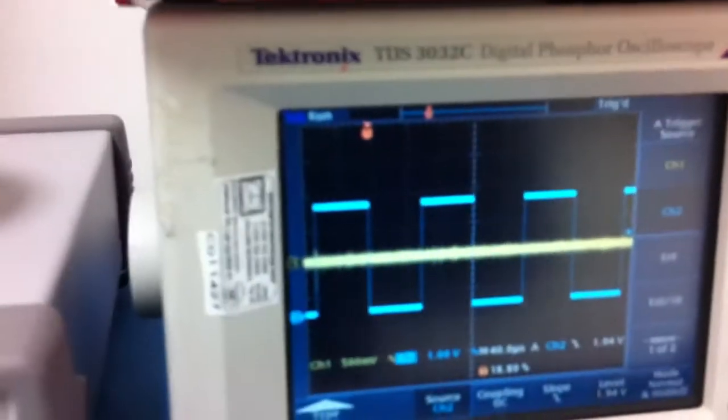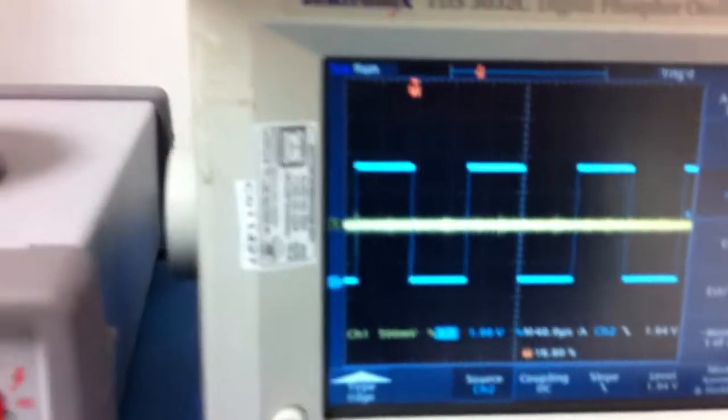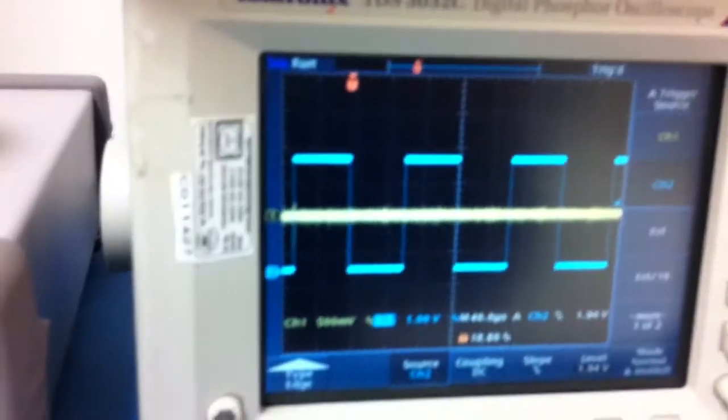Right now I have an 8 kilohertz pulse width modulated wave going to the inverter, but I don't have it enabled yet. On the Android, which is talking via USB to the Arduino, I turn it on and you start to see...